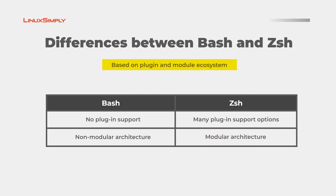Now, I will be differentiating them based on plugin and module ecosystem. Bash does not support new plugins — that is, it does not allow you to import new plugins or modules in the system — whereas in ZSH, different plugins or modules can be imported. Another advantage of ZSH is it has a modular architecture, meaning new features can be added to the pre-existing architecture, whereas in Bash this cannot be done, as it is a non-modular architecture.